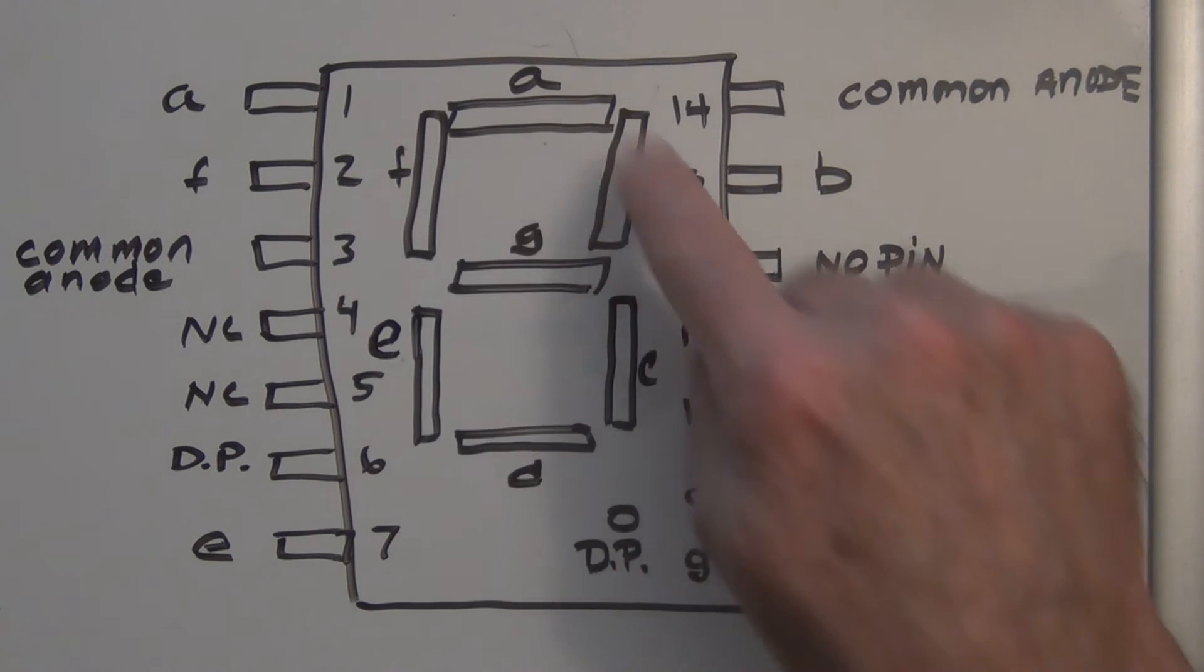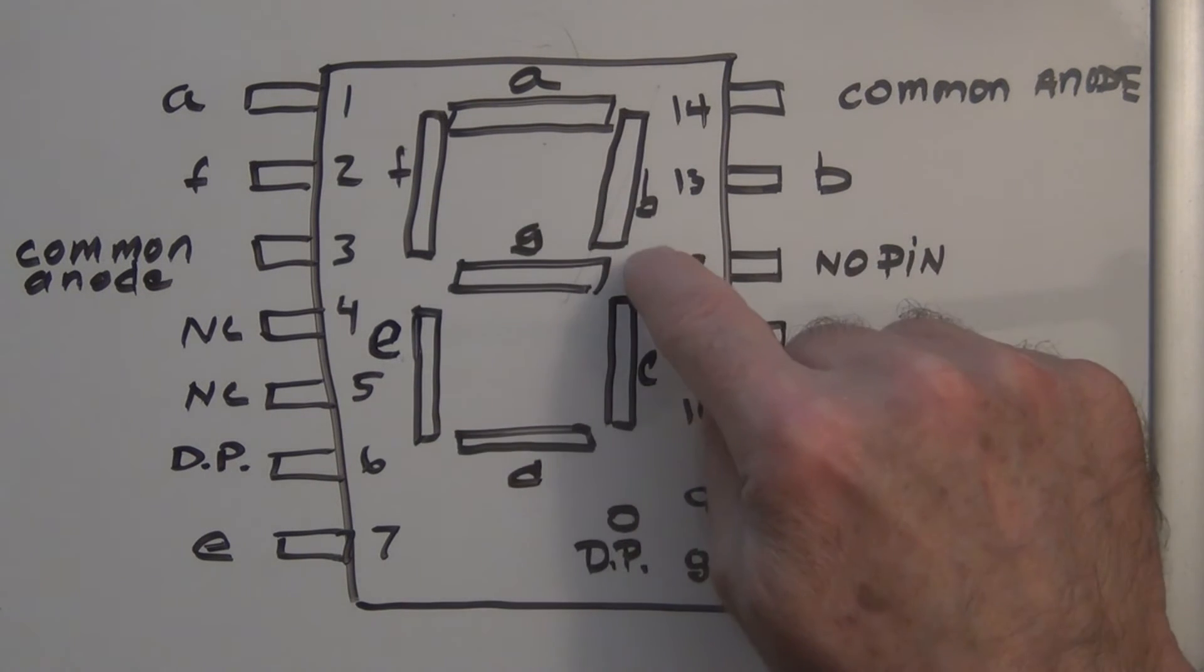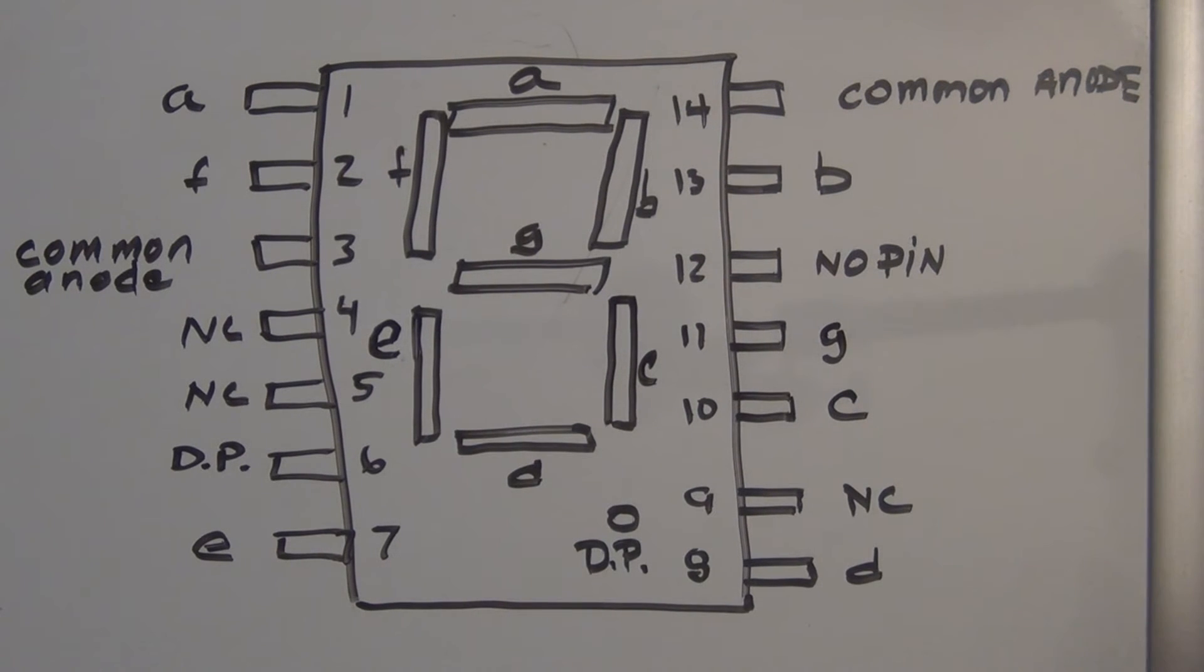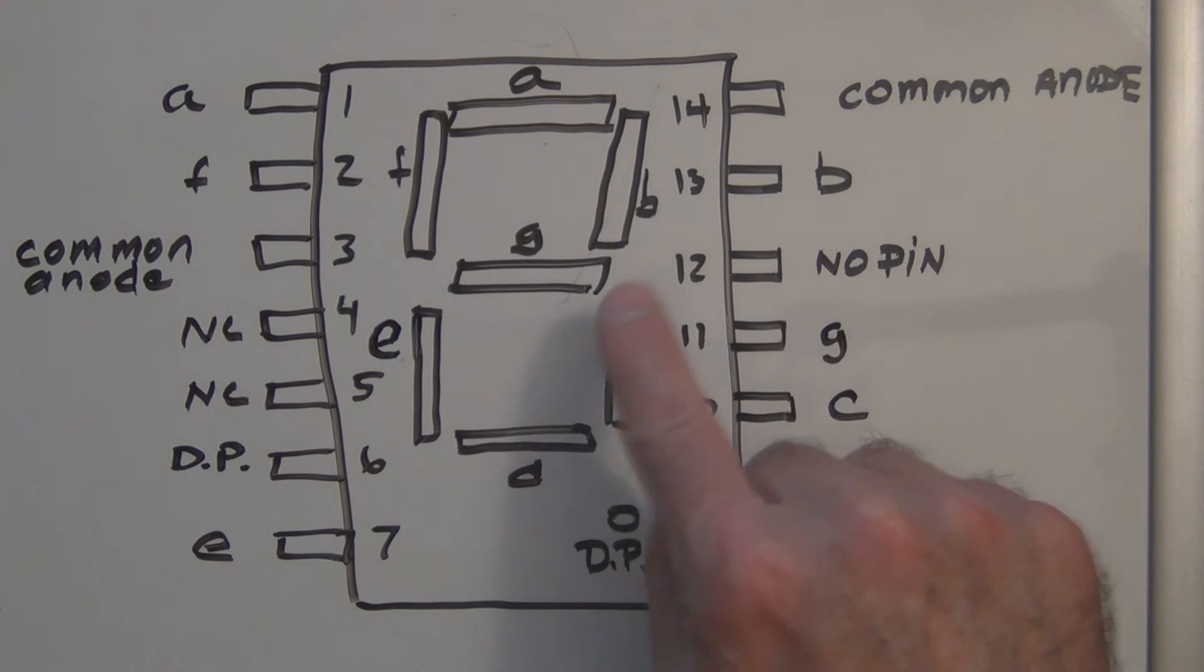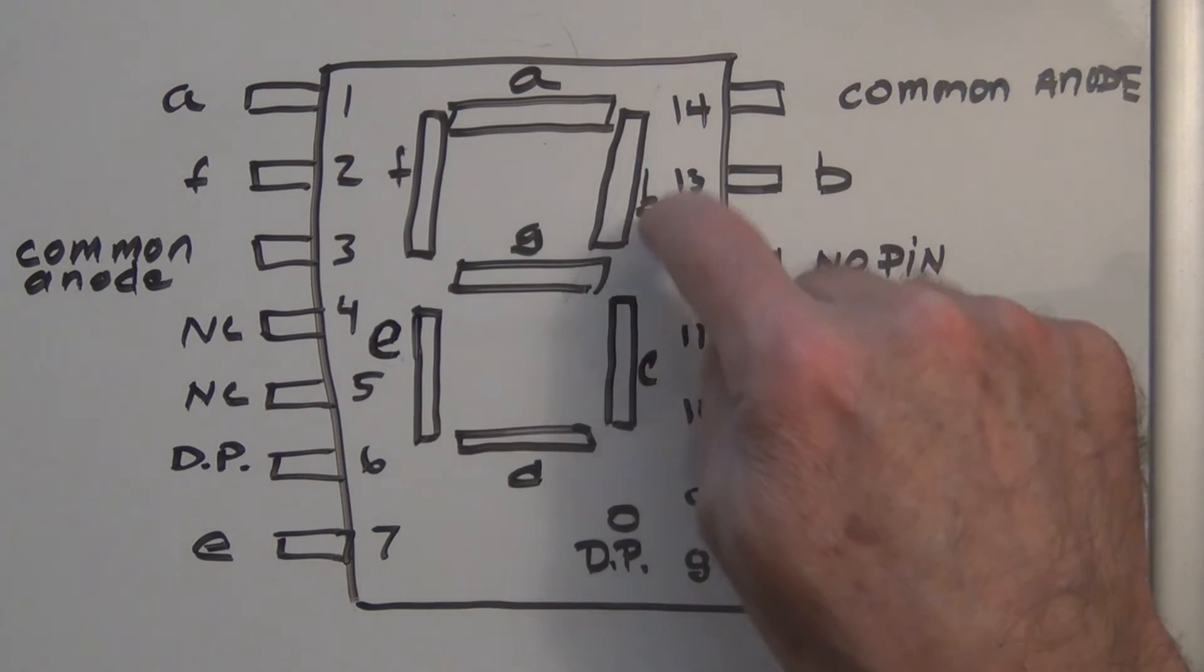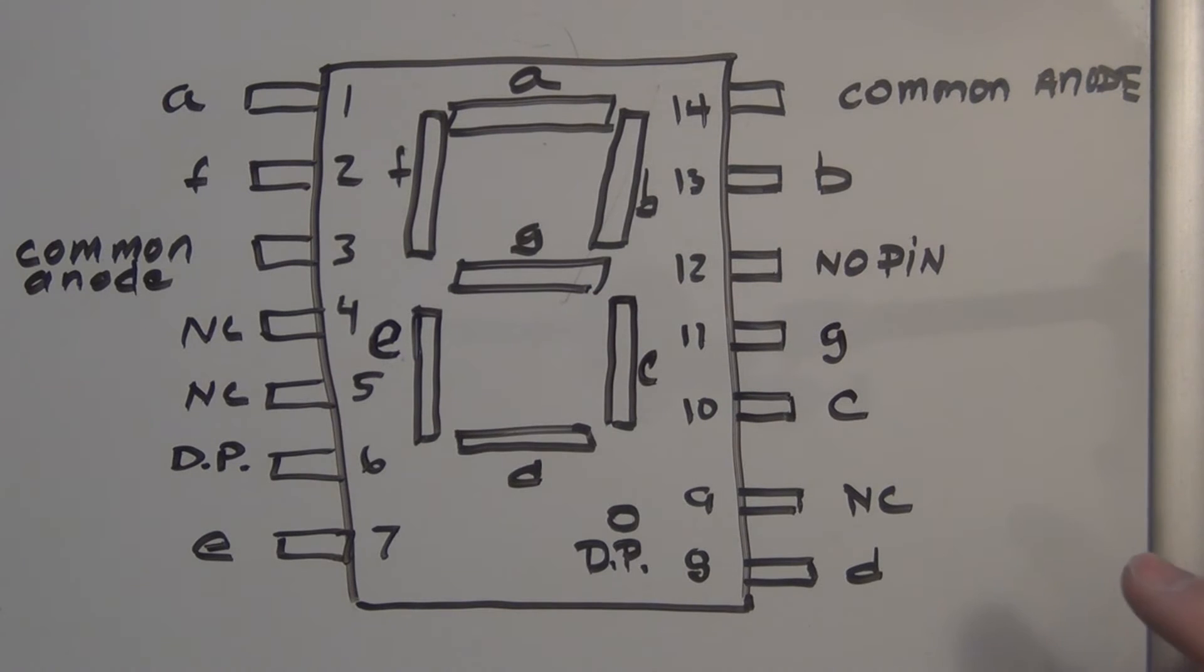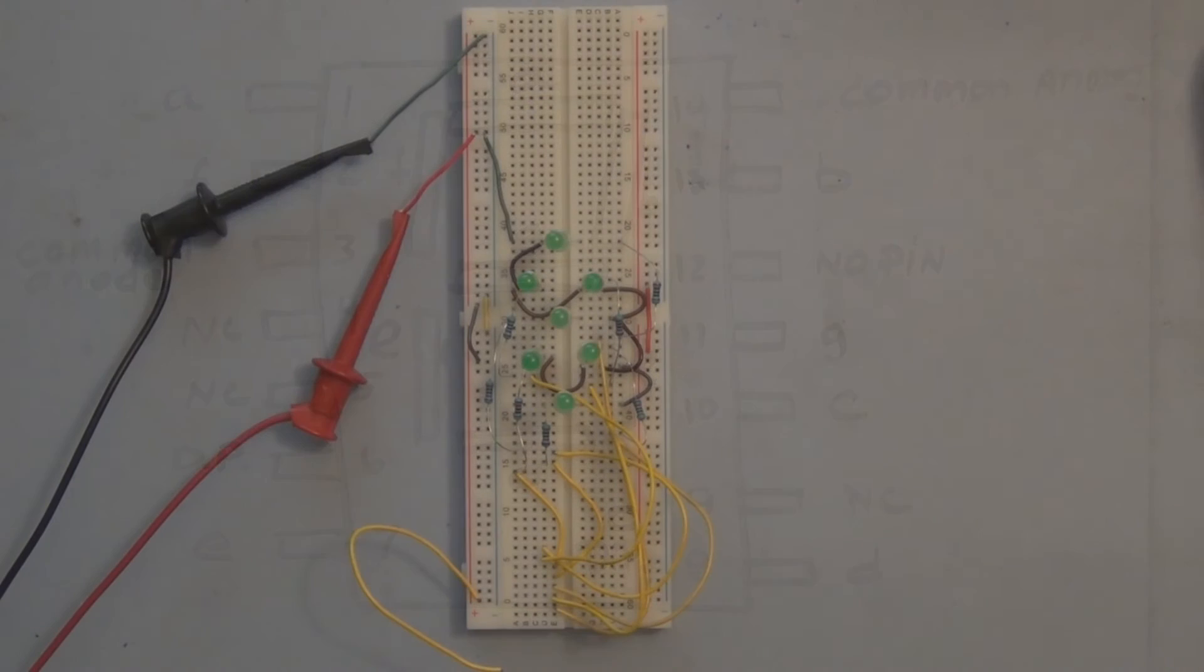So in order to produce your symbol or your decimal number, you have to light up the appropriate segments to make it look like the symbols that we all recognize as decimal symbols. For instance, an eight: you would have to light up all the segments A, B, C, D, E, F, and G. And then like I said, some of these also have a segment for the decimal point.